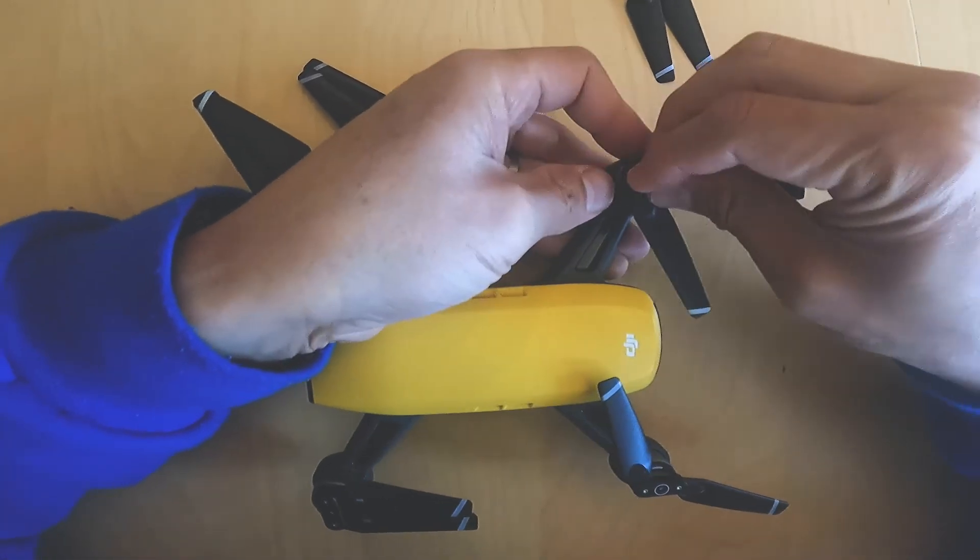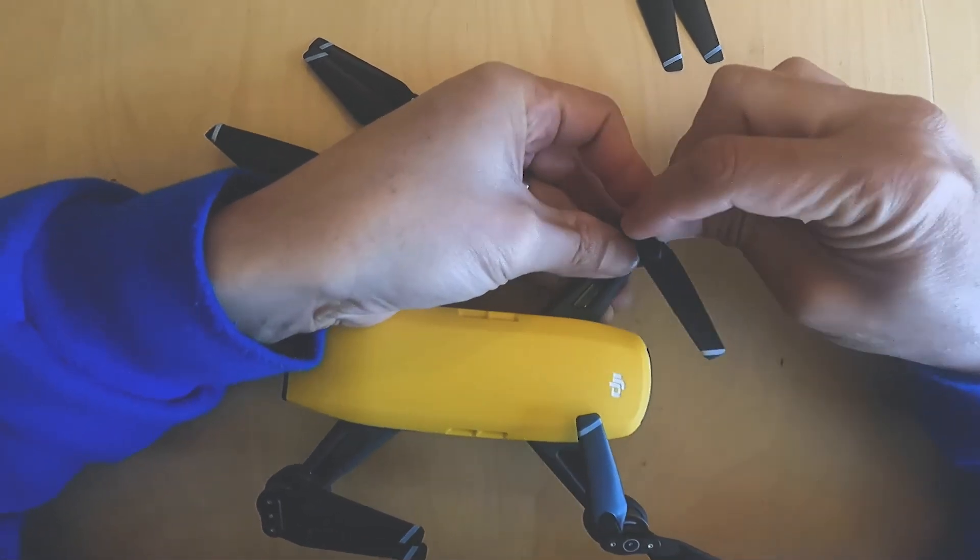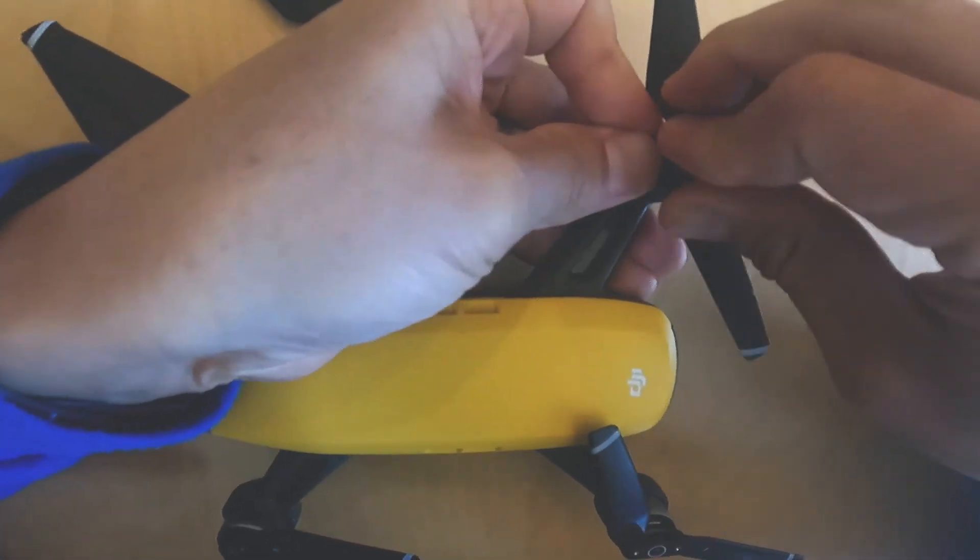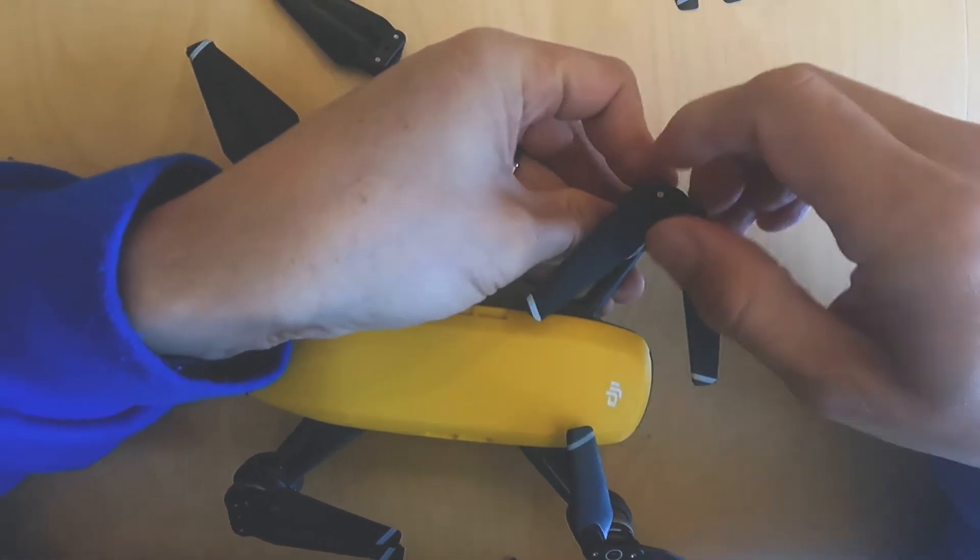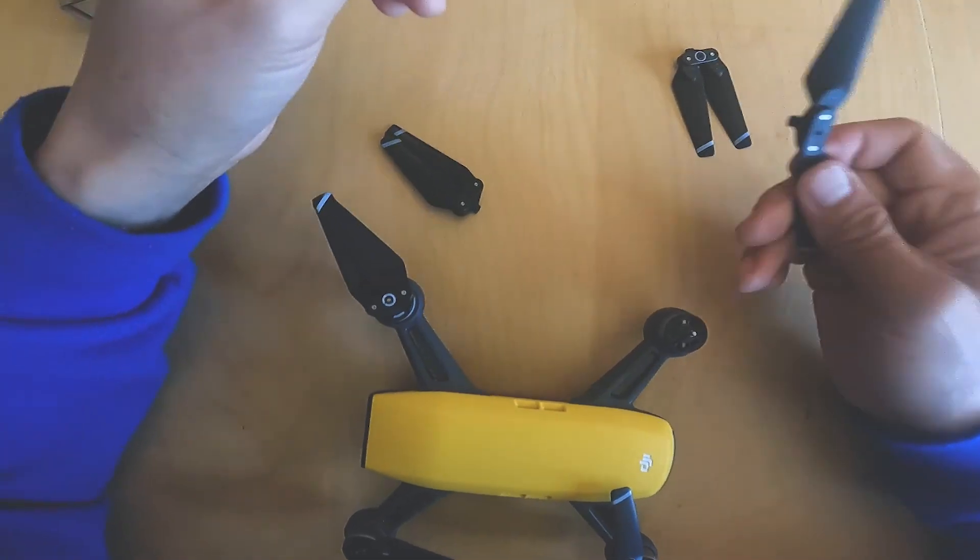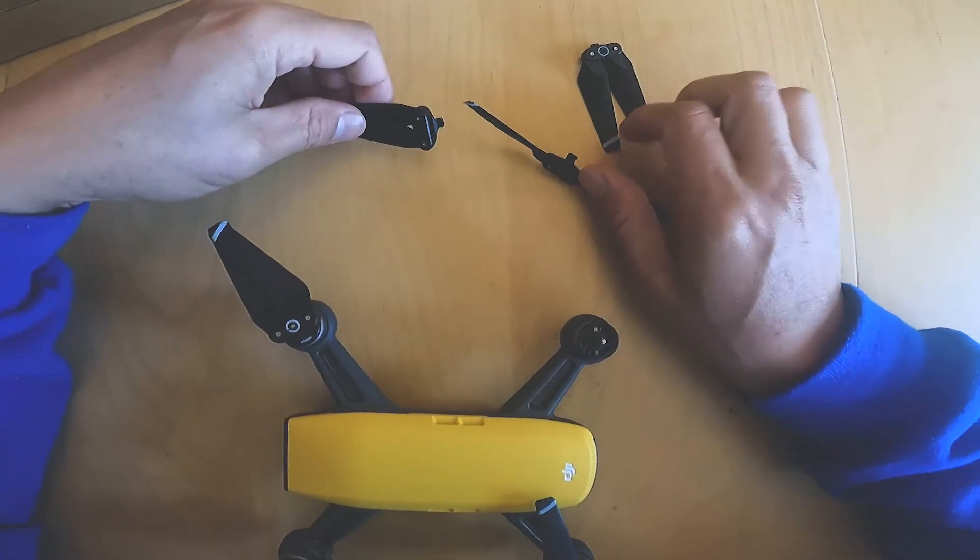So again, what I'll do is press down and depending on which propeller it is, I'll turn either clockwise or counterclockwise. In this case, it's clockwise for the ones without the white marking.